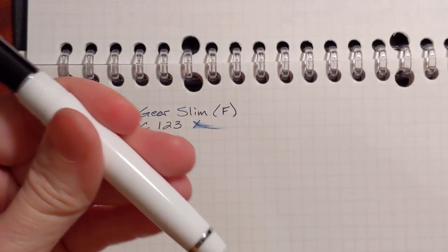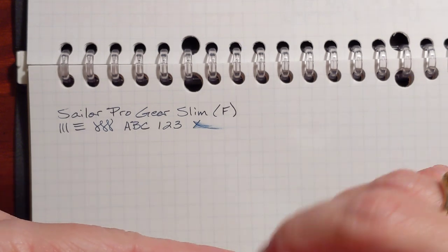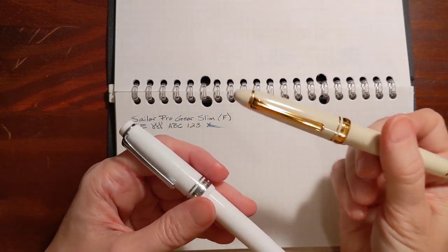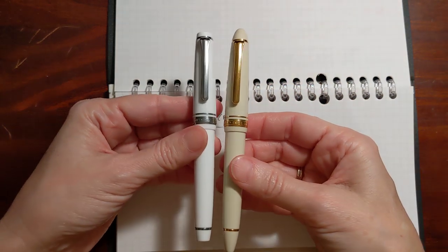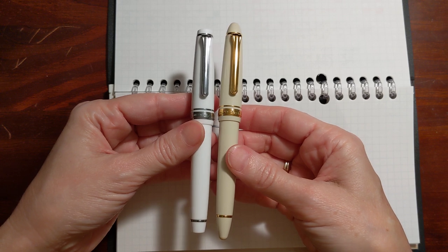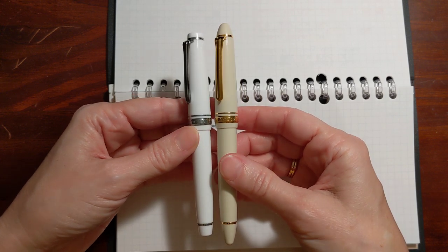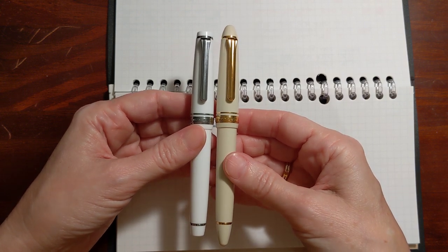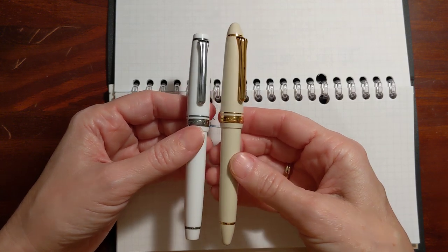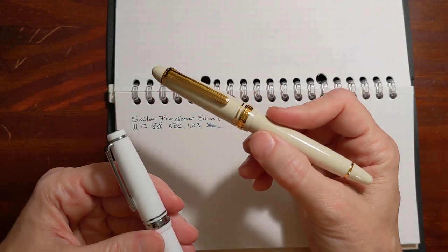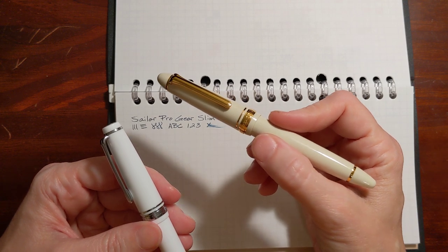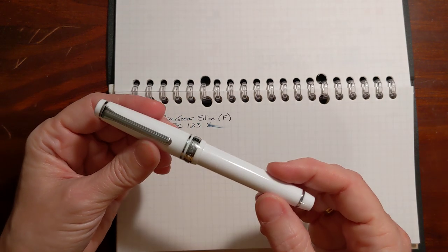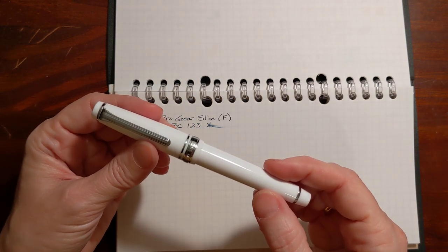So whenever I'm in the mood to use a Sailor pen, I tend to reach for my 1911. The only substantial difference between the two is, you can see the proportions are the same. The Pro Gear Slim has a flat top and the 1911 has a round top. And I reach for the 1911 because it has a medium nib that does not tend to pick up those paper fibers. But the Pro Gear Slim is still a great little pen. I enjoy using it.